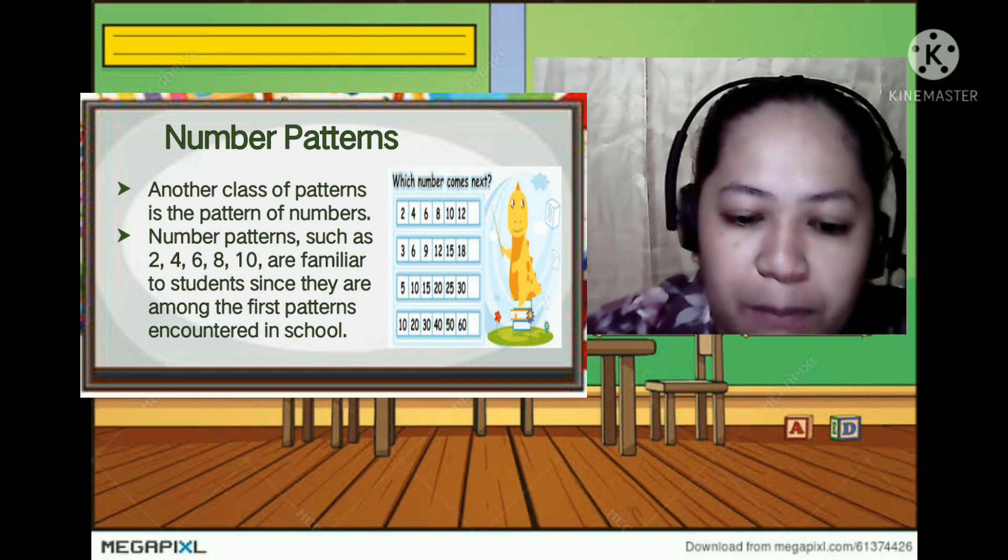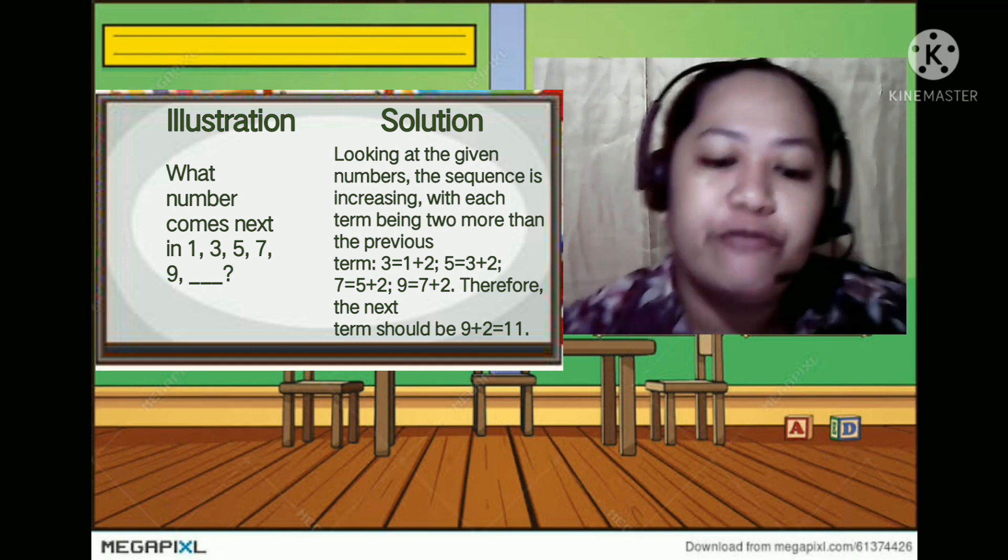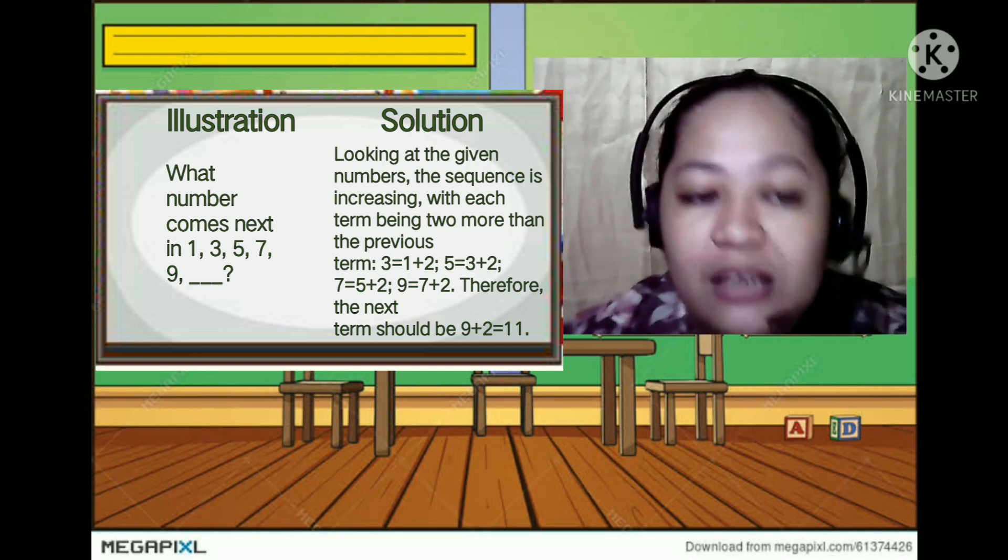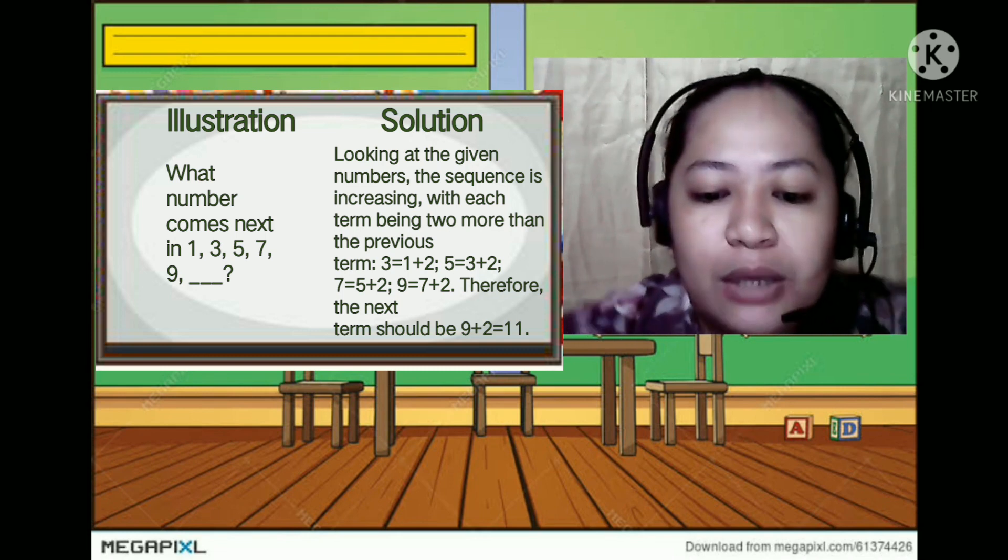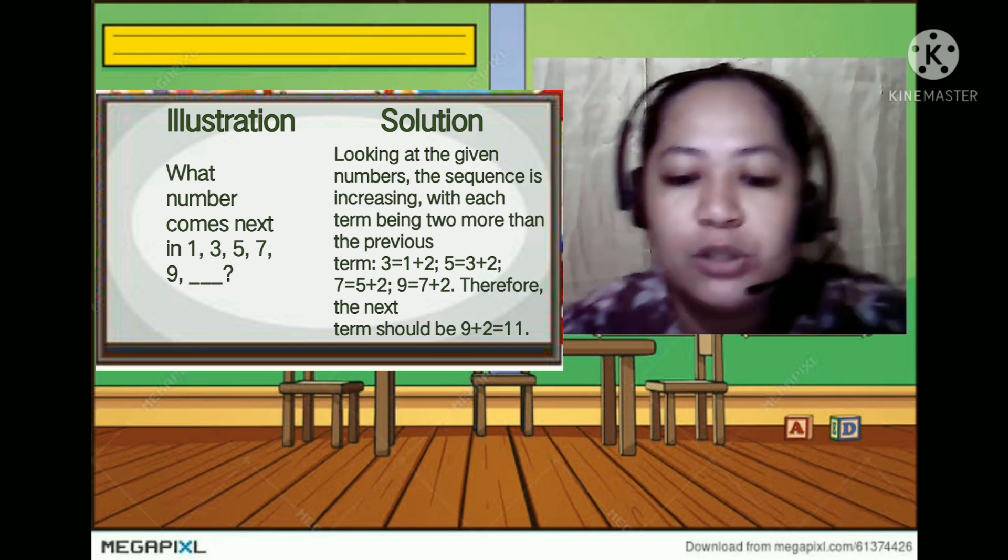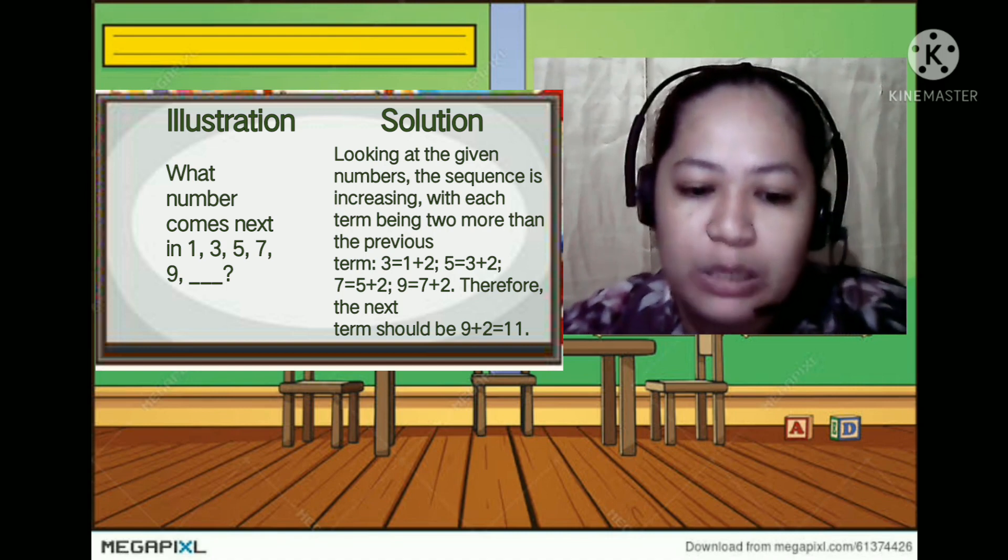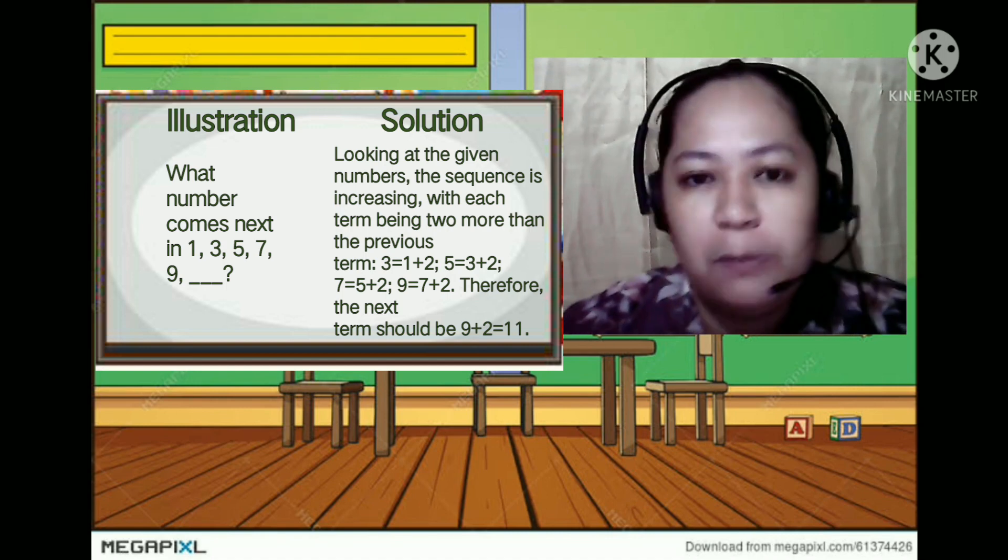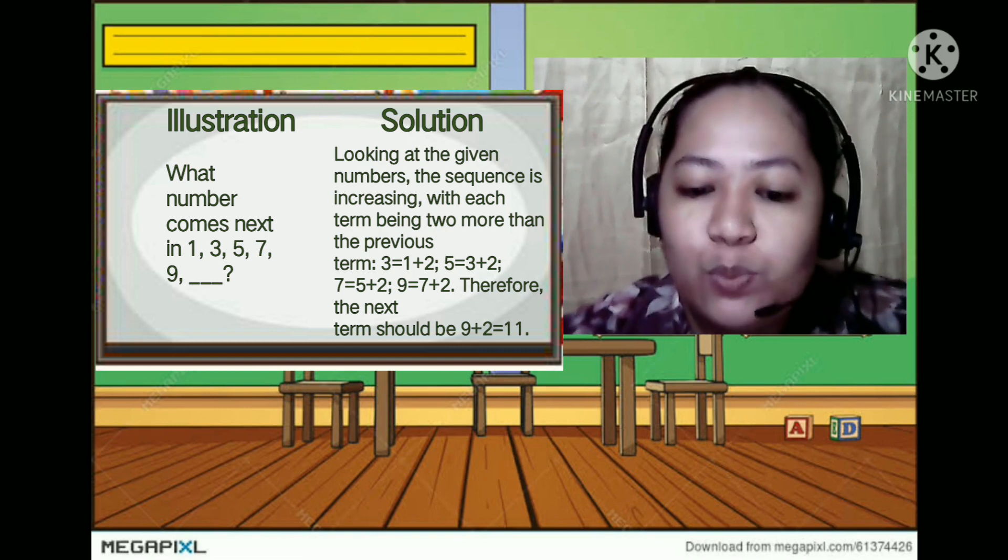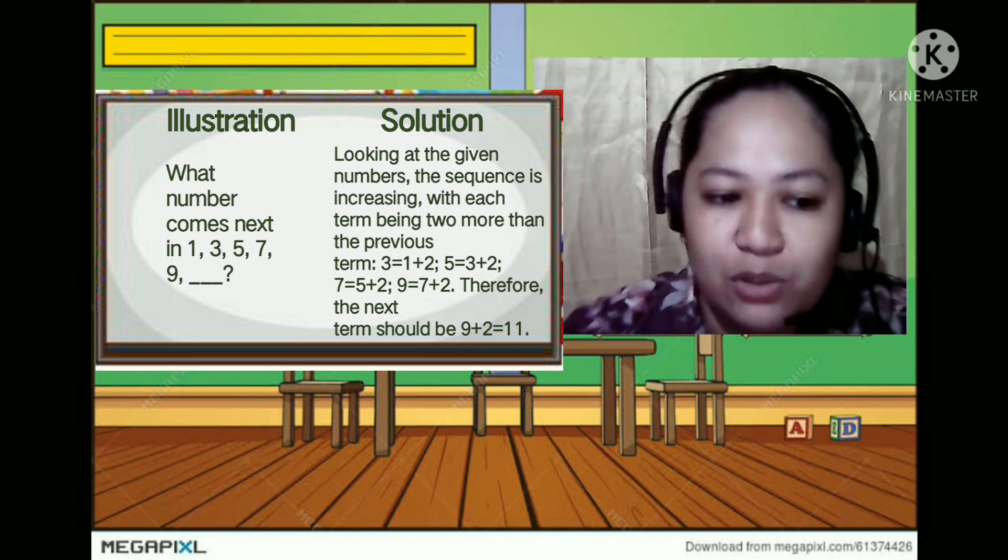Example: what number comes after or next in 1 3 5 7 9 and then question mark? So looking at the given numbers, the sequence is increasing with each term being two more than the previous. So 1 plus 2 is 3, 3 plus 2 is 5, 5 plus 2 is 7, 7 plus 2 is 9. So therefore the next term should be 11. So that's 9 plus 2 equals 11.